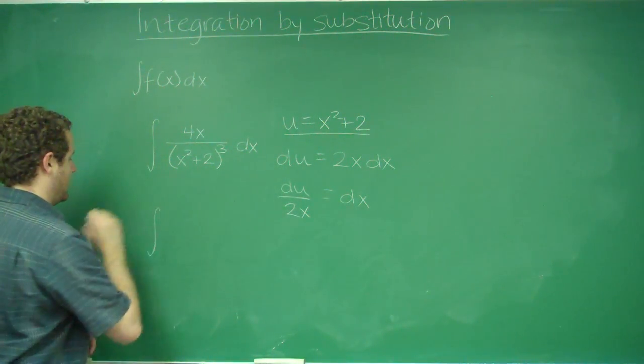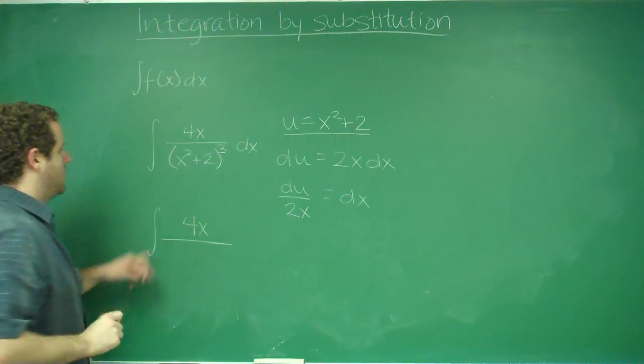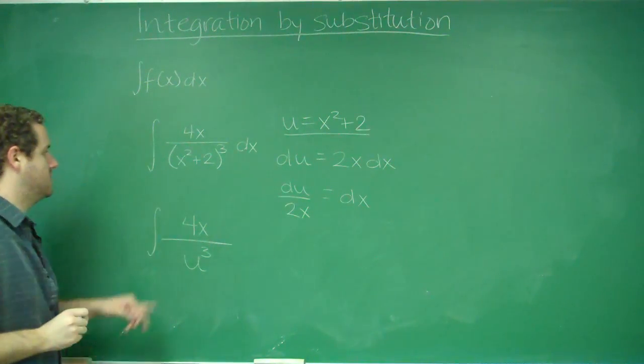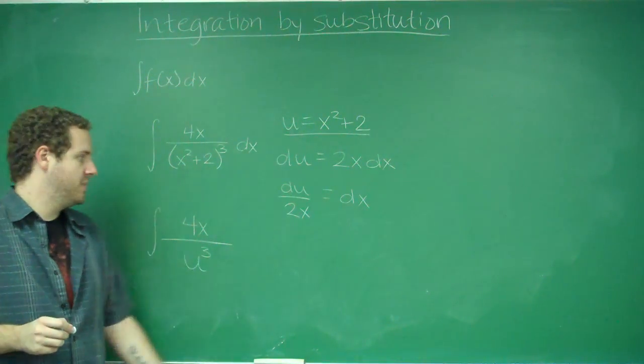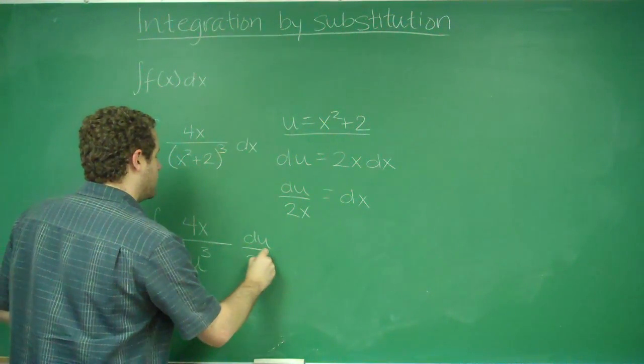We still have 4x in the numerator. Now on the bottom, we're just going to have u to the third power, because our x squared plus 2 became u. And instead of dx, we're going to write du over 2x.